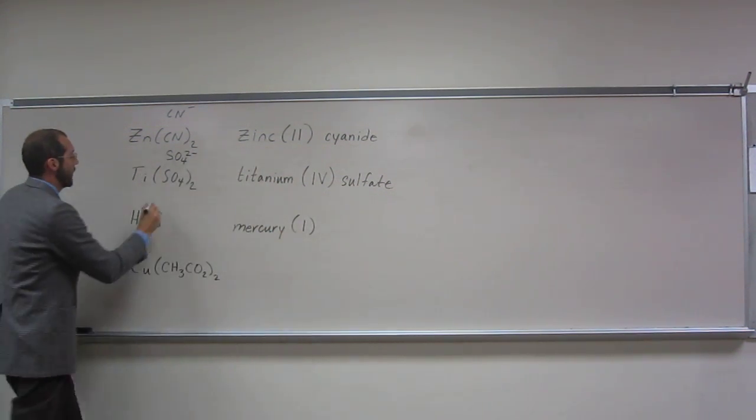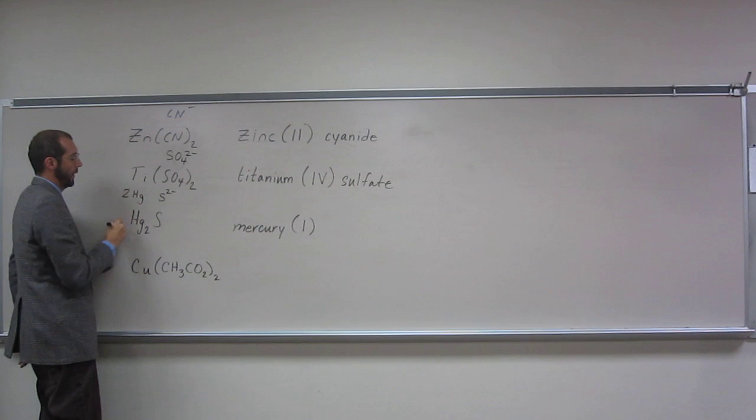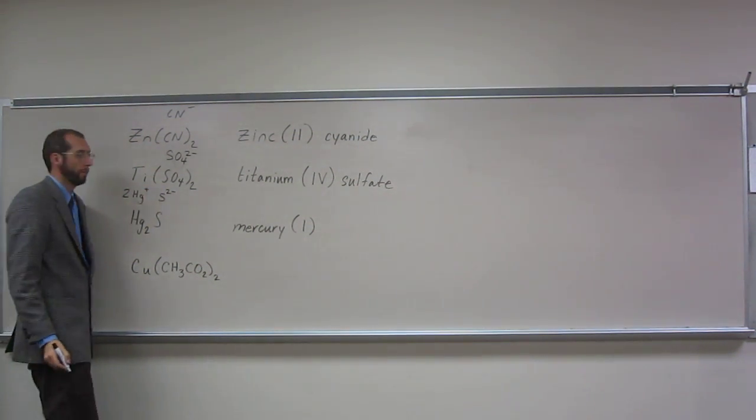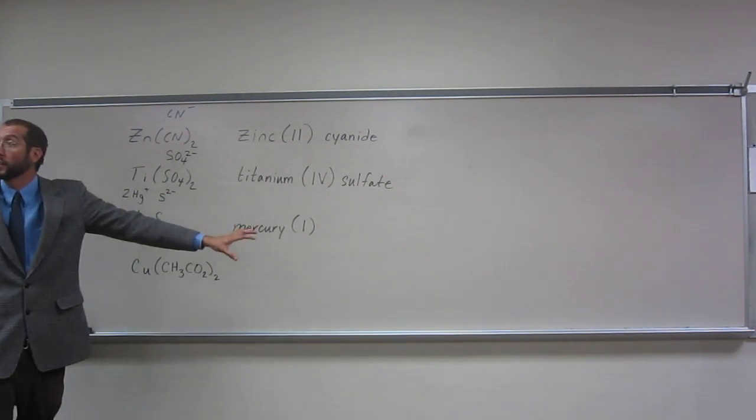Why? Because this is going to be S two minus. So we have to have something like that. And that's sulfide. This particular one is going to be mercury(I) sulfide.